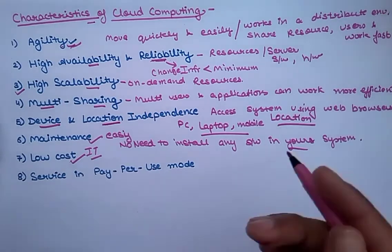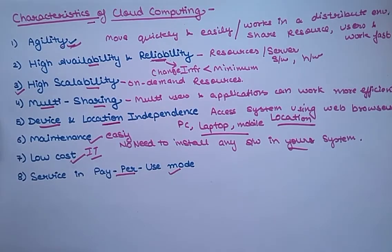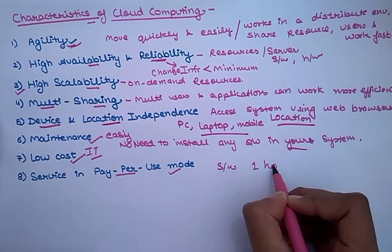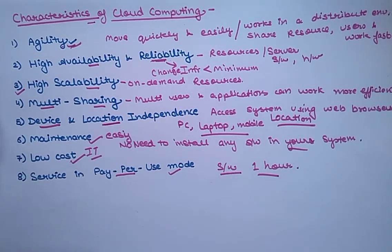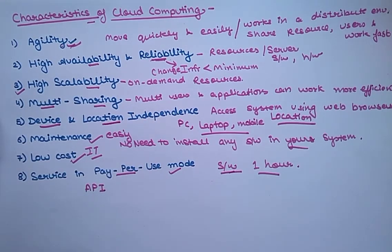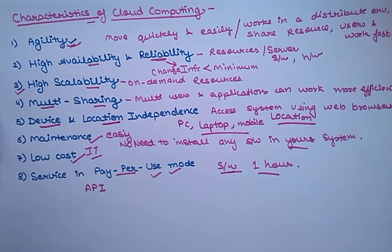The last point is service in pay-per-use mode. Cloud provides a pay-per-use service — we only pay for what we have used. For example, if I use a software for only one hour, I will pay only for that amount. I don't have to buy the software or any particular infrastructure to run it. Application programming interfaces (APIs) are provided to users so they can access services on the cloud and pay charges as per usage.